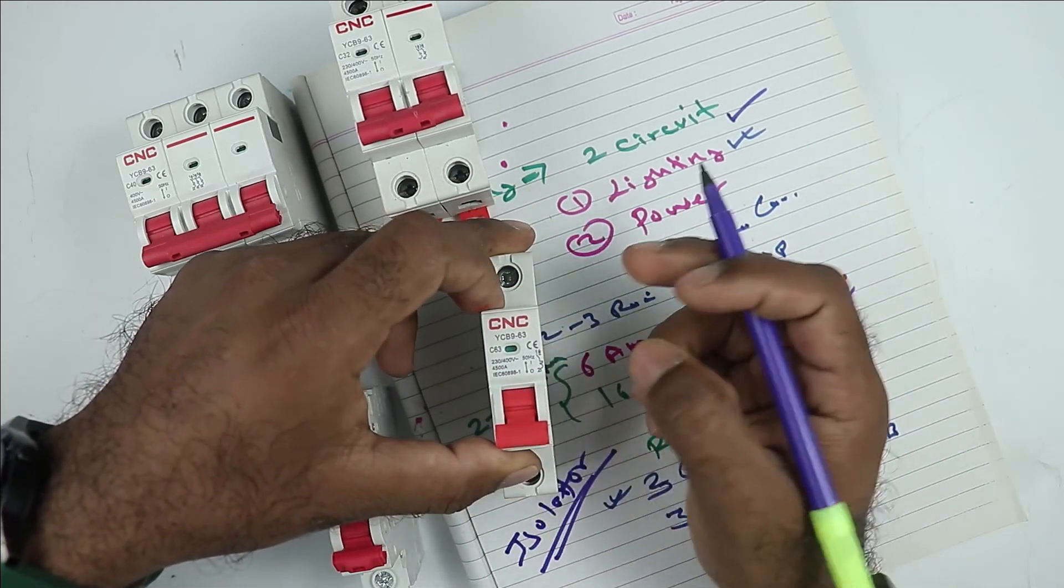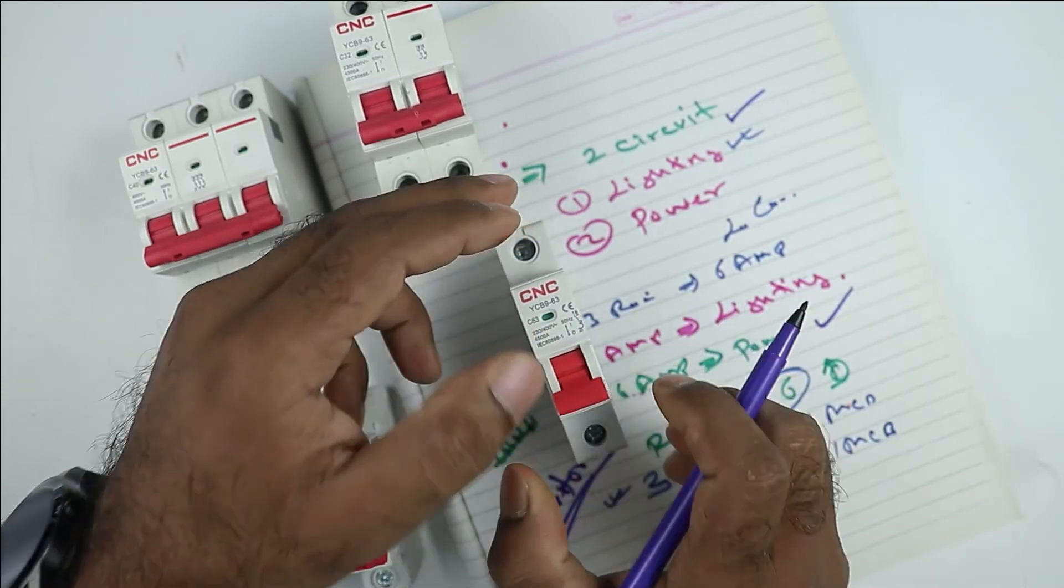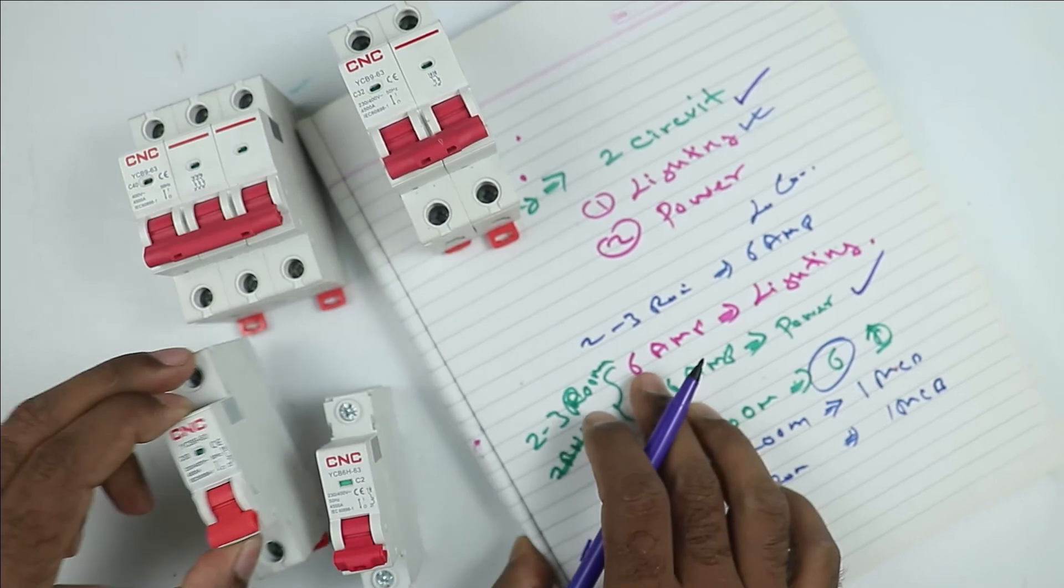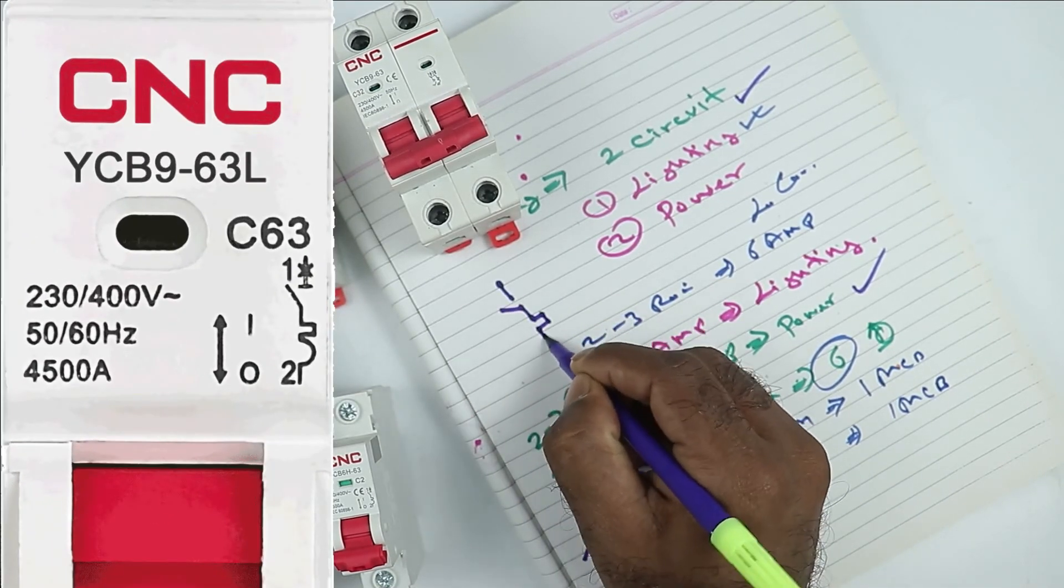But if you buy isolator, then it will not provide any kind of protection. So when you go to buy this MCB, you must see one thing that above the MCB, this type of symbol must be present.